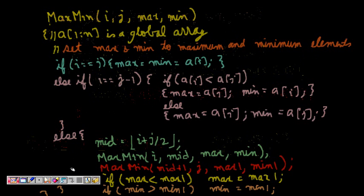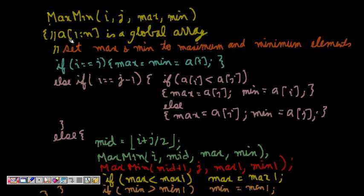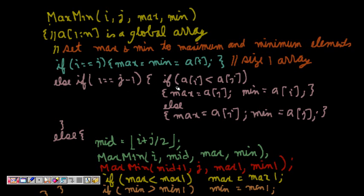We have a max-min function operating on a global array a. The base case: if the array is of size one, max and min are both equal to that single element. The next base case: if the array has two elements a[i] and a[j], if a[i] is less than a[j] then max is a[j] and min is a[i]; otherwise max is a[i] and min is a[j].